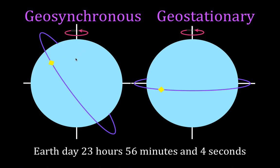When the Earth spins once and the satellite orbits once, what that means for a geosynchronous orbit is that the satellite will come back to the same place in the sky every day — every 23 hours 56 minutes and 4 seconds, or every day. That's what you get with a geosynchronous orbit.